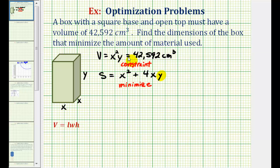So looking at our volume formula, or our constraint, if we solve this equation for y, we would divide both sides by x squared. Therefore, y is equal to 42,592 divided by x squared.